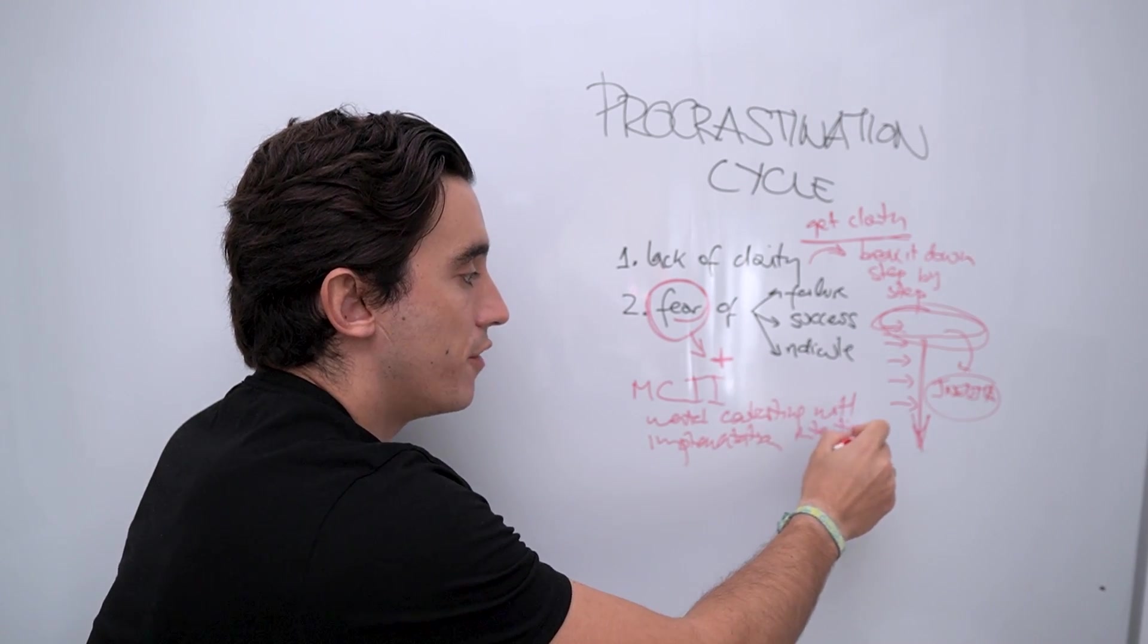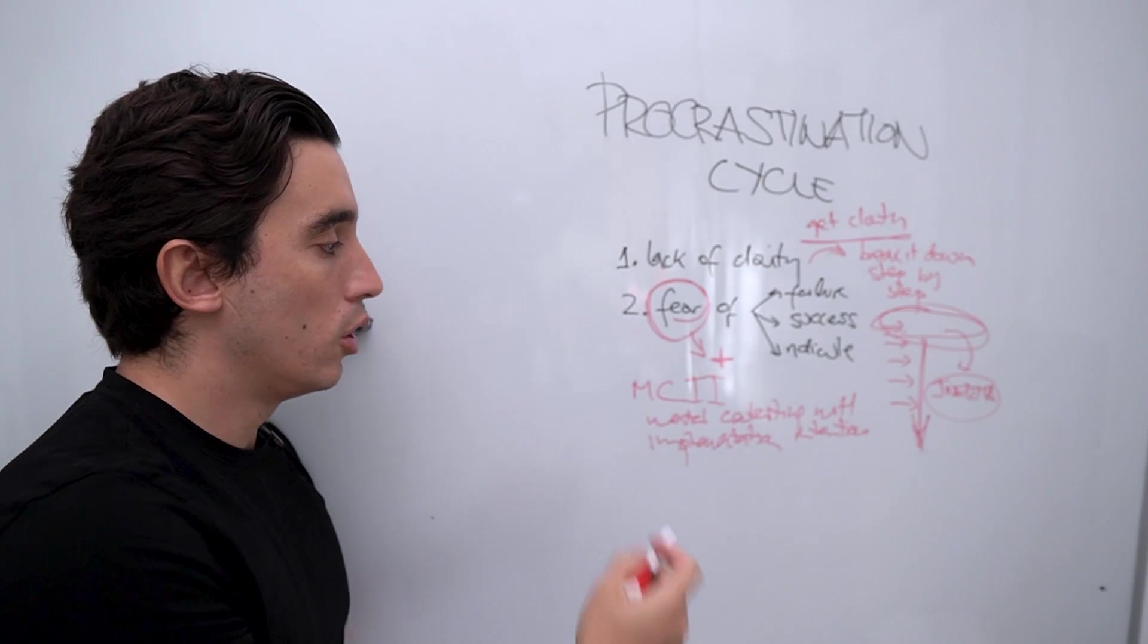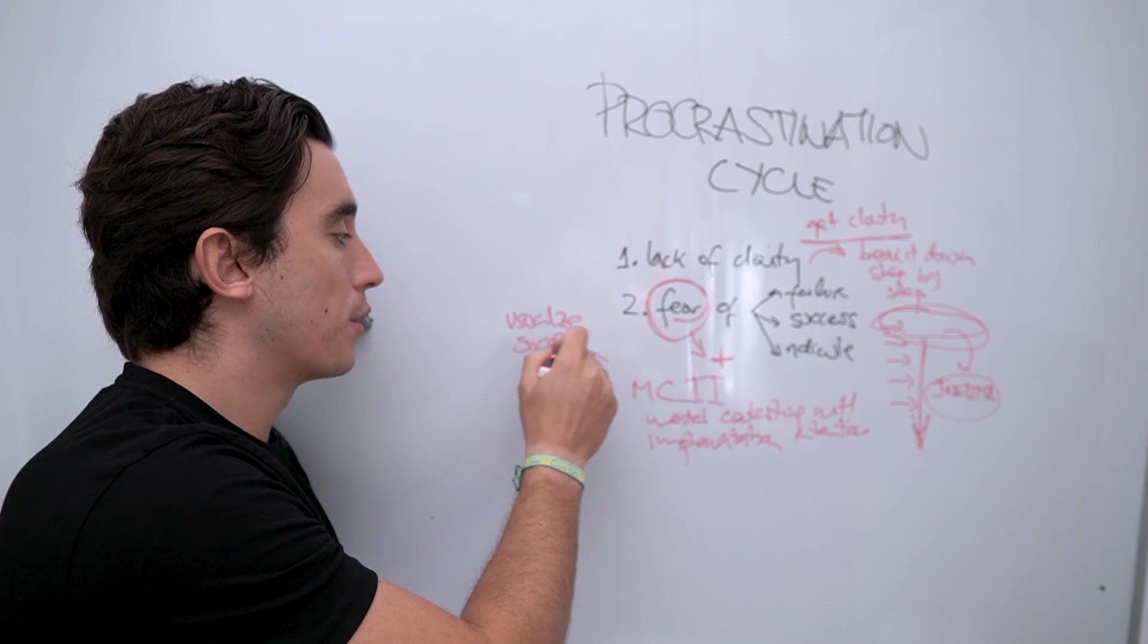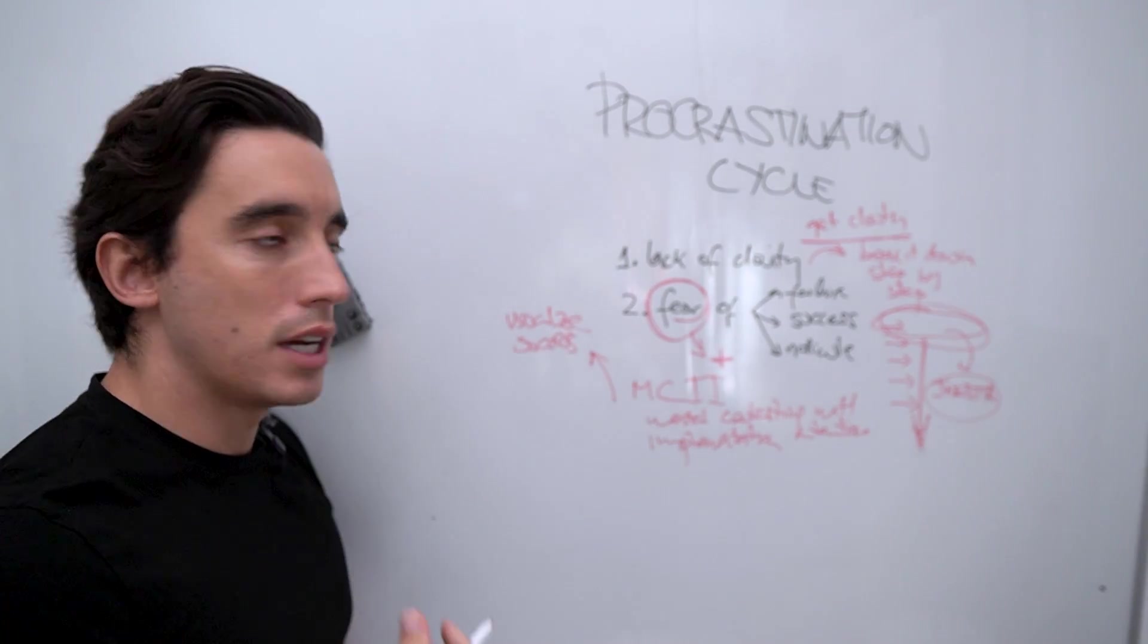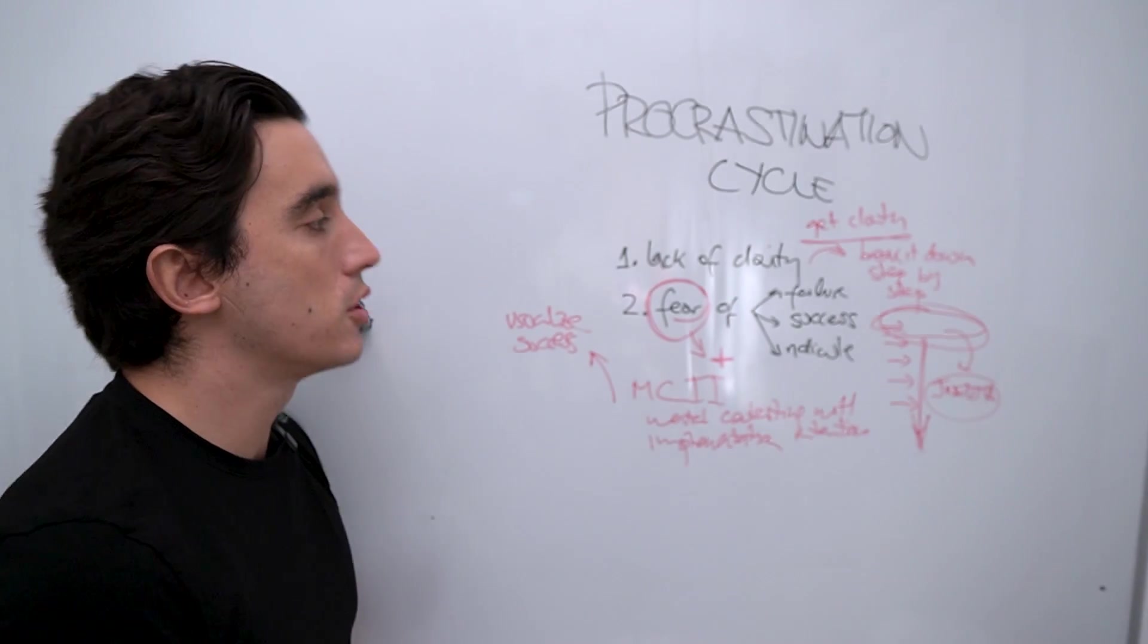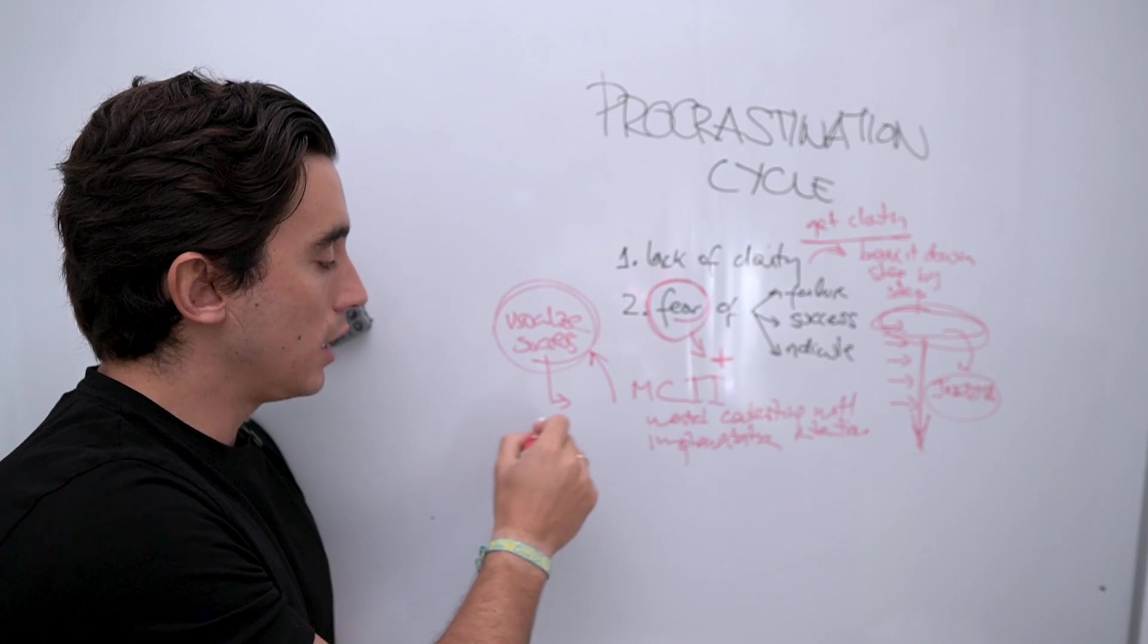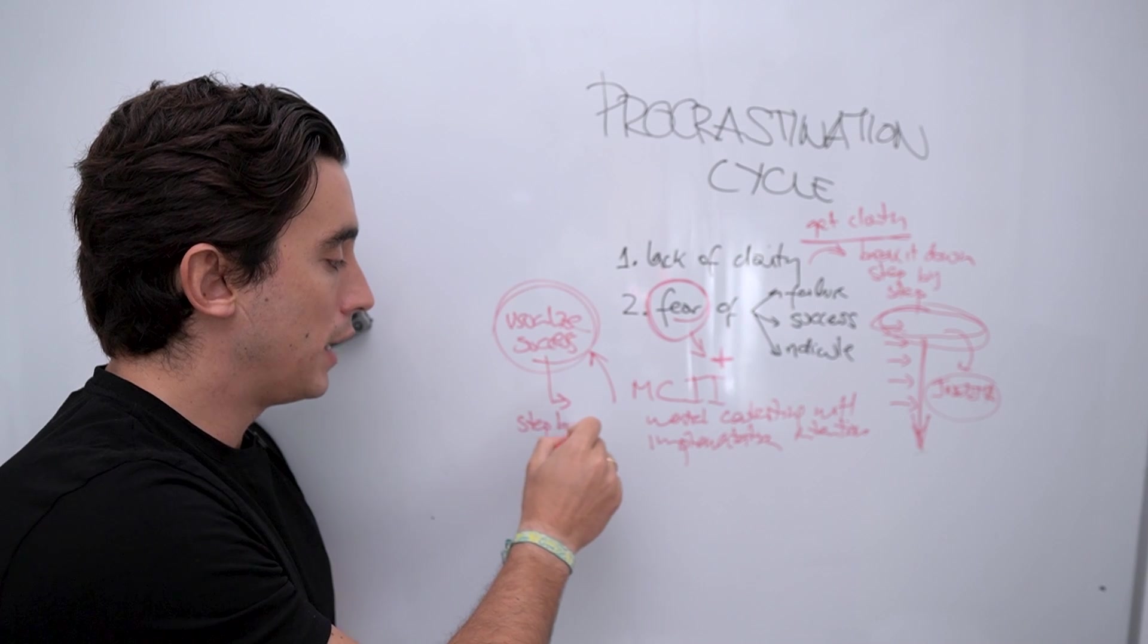And there's a strategy called MCII, which is mental contrasting with implementation intentions. So what this is, is in essence, visualizing what is the end result of the thing that you are trying to do. Visualizing success.